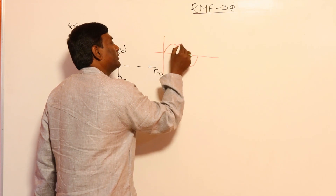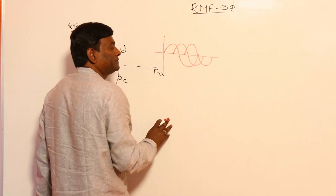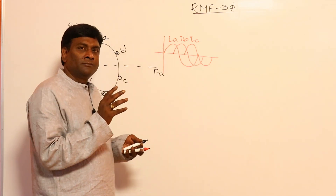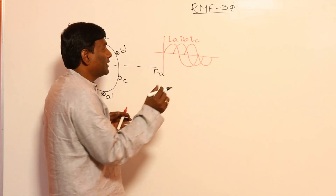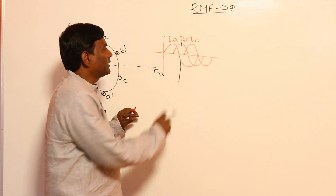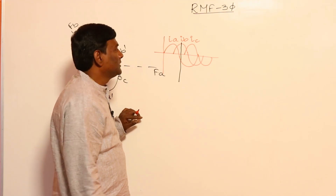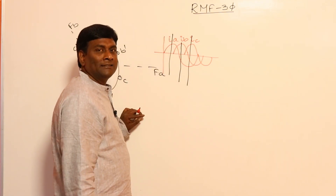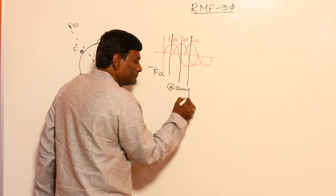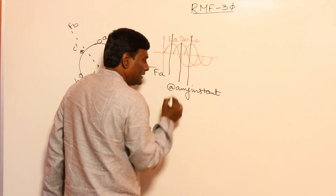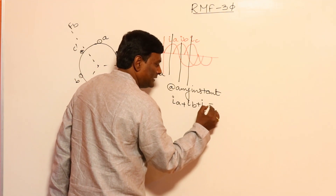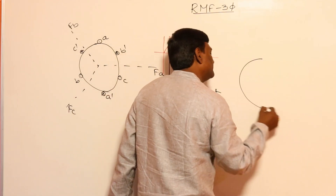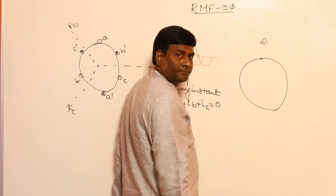Now through these space-displaced windings let me inject three-phase time-displaced currents: Ia, Ib (120° displaced), and Ic (120° further). In three-phase, at any instant, Ia + Ib + Ic = 0. For example, when Ia is at positive maximum, Ib and Ic will each be half of the negative maximum. Similarly, when Ib is maximum, Ia and Ic are half of negative maximum, and the same holds for Ic being maximum.